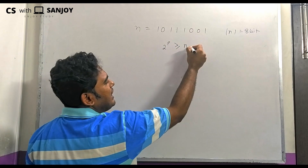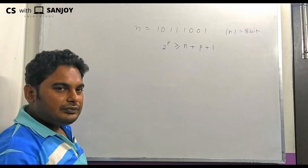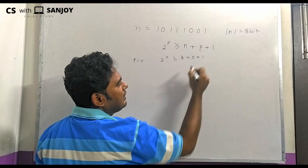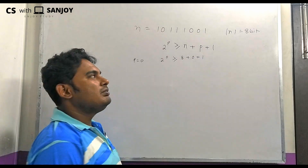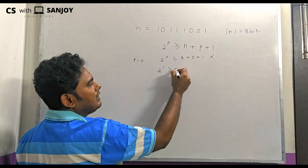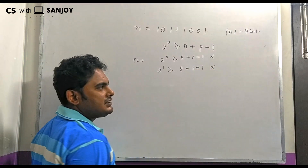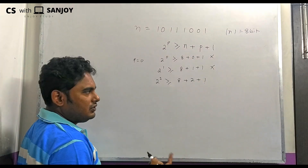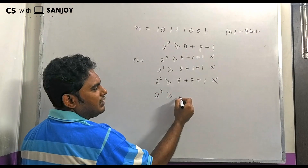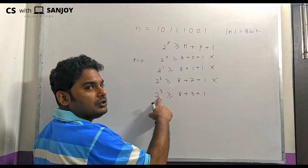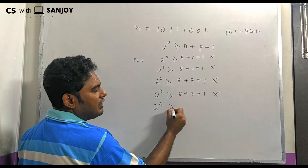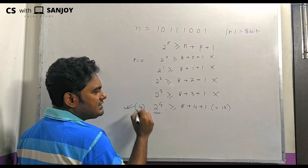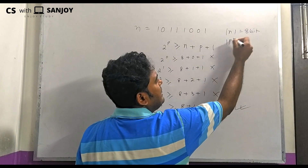The formula is 2 to the power of p greater than or equal to n plus p plus 1. If p=1: 2 ≥ 10, not satisfied. If p=2: 4 ≥ 11, not satisfied. If p=3: 8 ≥ 12, not satisfied. If p=4: 16 ≥ 13, this condition satisfies. So therefore we found p equals to 4 bits.